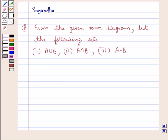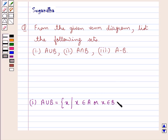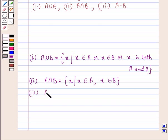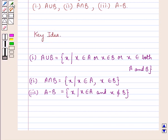Before we move on to the solution, let's see what is the union, intersection, and difference of two sets. A union B is the set containing element X such that X belongs to A, or X belongs to B, or X belongs to both sets A and B. A intersection B is the set containing element X such that X belongs to A and X belongs to B. A minus B is the set containing element X such that X belongs to A and X does not belong to B. This is the key idea we use for this question.